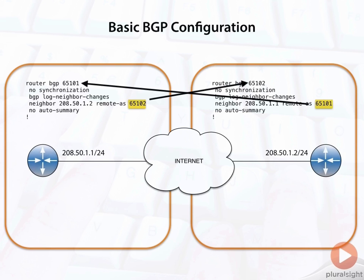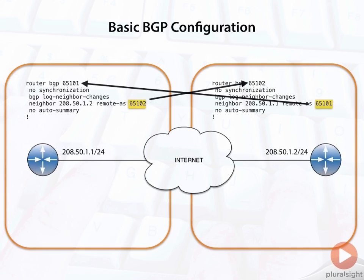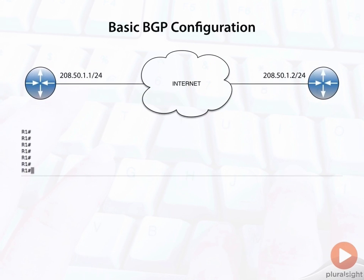This is what we would call eBGP, or external BGP, because both of these neighbors are in different Autonomous Systems. Let's go ahead and slide this up and look at the command line as we view a basic BGP neighbor.